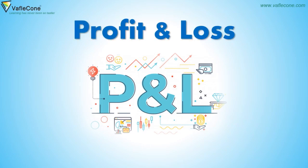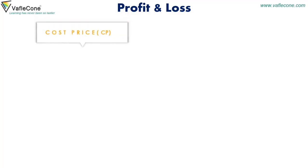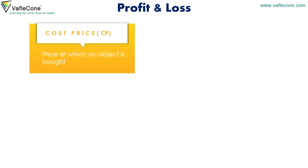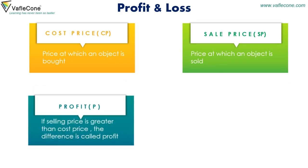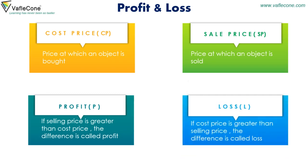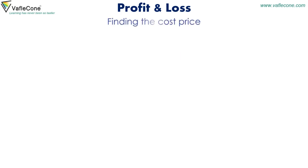Profit and Loss. Cost Price: the price at which an object is brought is called cost price. Sale Price: the price at which an object is sold is called sale price. Profit: if selling price is greater than cost price, the difference is called profit. Loss: if cost price is greater than selling price, the difference is called loss.